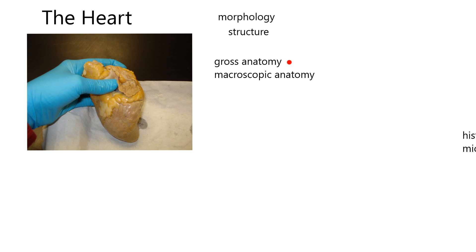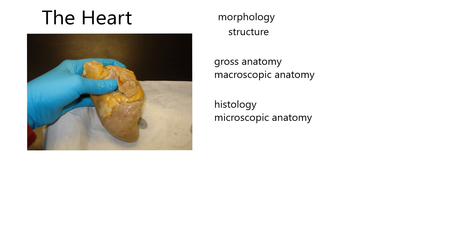Gross doesn't mean yucky. Gross means you're not using the aid of any microscope. Another term for gross anatomy is macroscopic. Macro usually means large, and scopic is seeing, so we are using our eyes to study anatomy. You could contrast that with using a light microscope — then we'd say we're going to do histology. Histology means the study of tissue. Anything ending in -logy means the study of, and histo means tissue. Histology can also be called microscopic anatomy; micro means small.